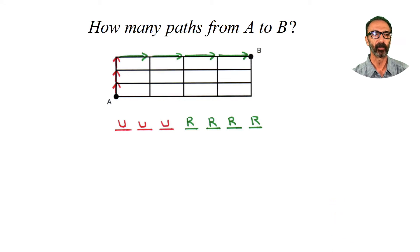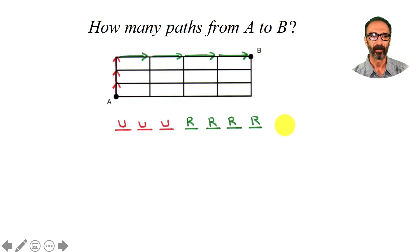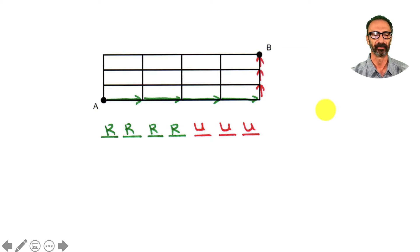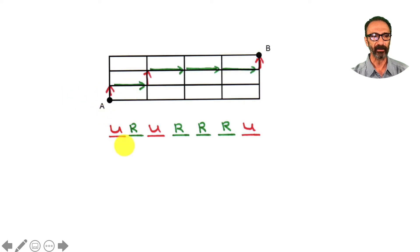If you go straight up one, two, three, then right one, two, three, four — that's one way: up, up, up, right, right, right, right. But that's not the only way. How about going right first — right, right, right, right — then up, up, up? That's another way. Let's try something different: up-right, up-right, up-right, up-right, right, right.